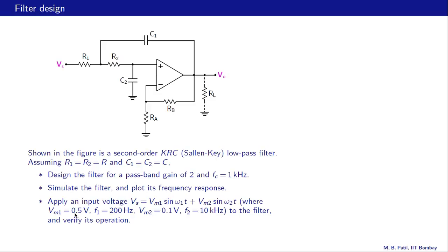Finally, apply an input voltage Vs equal to Vm1 sin(ω1·t) plus Vm2 sin(ω2·t) — two sinusoids. One has a low frequency of 200 Hz, which is smaller than the cutoff frequency. The other has a higher frequency of 10 kHz, which is higher than the cutoff frequency. We should see that the high frequency component is filtered out and at the output we get only the low frequency component.